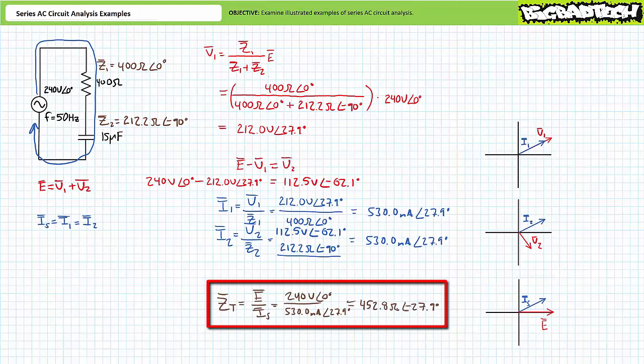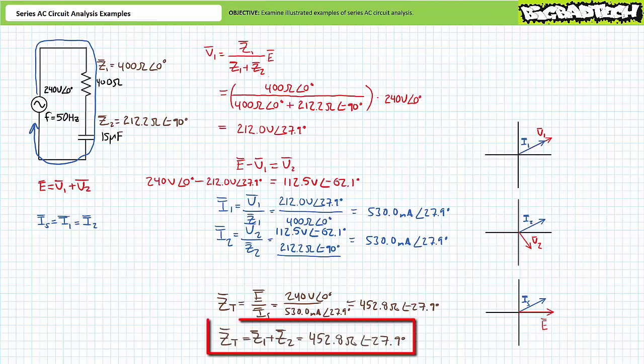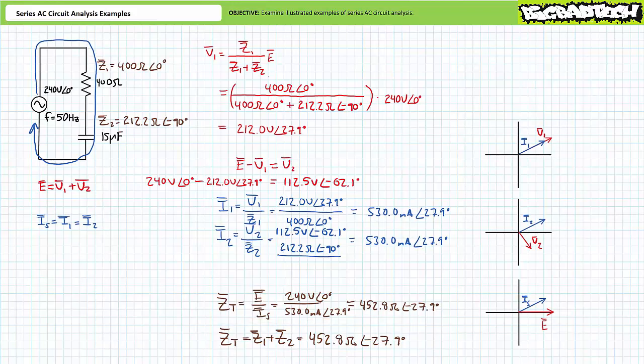As a means of checking our work, one can solve for total impedance using implementation of Ohm's law. Supply voltage over source current yields a total impedance of 452.8 ohms at an angle of negative 27.9 degrees. Similarly, the summation of Z1 and Z2 also yields a total impedance of 452.8 ohms at an angle of negative 27.9 degrees. I've got a reasonable degree of confidence our answers are correct and we can move on to the next illustrated example problem.